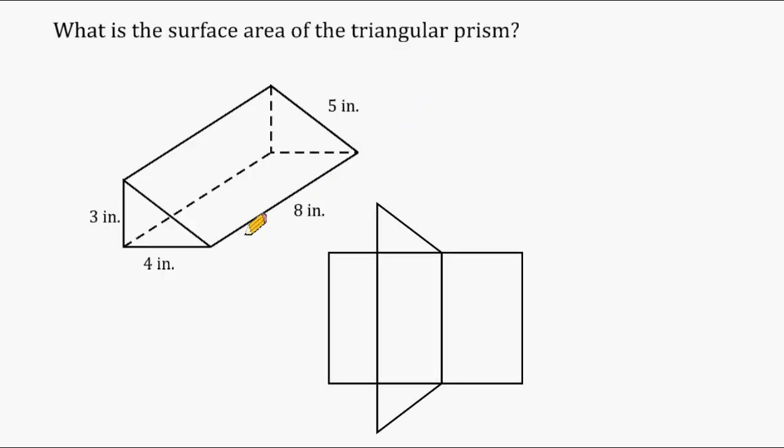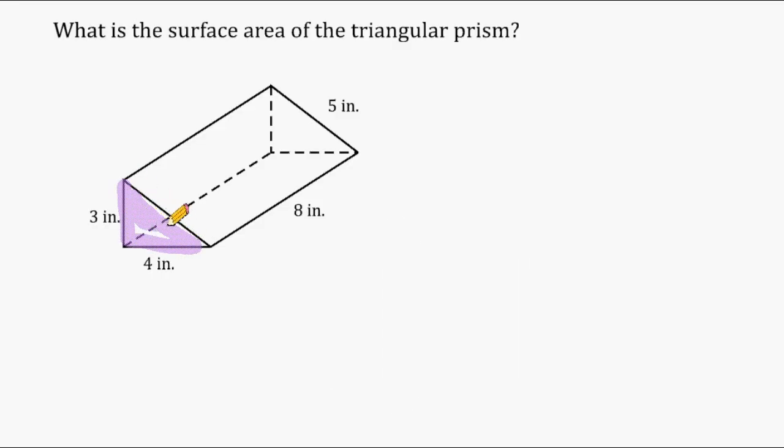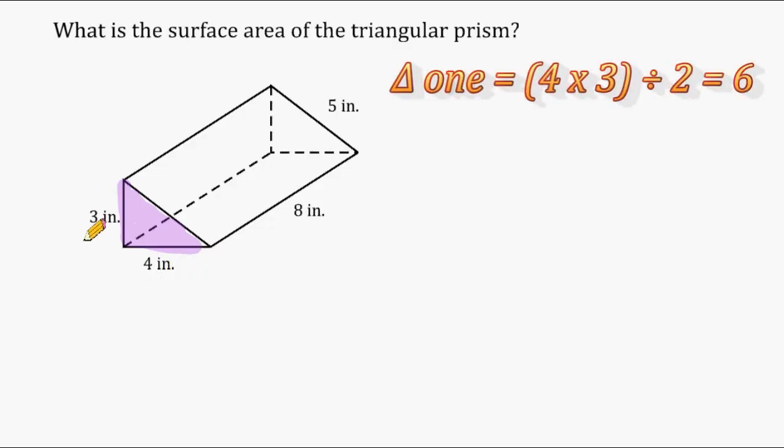Let's start by finding the area of our two triangular surfaces. We can see that we have a right triangle here, and the base of this right triangle is 4, and its height is 3. To find the area of any triangle, you multiply its base by its height and then divide that product by 2. So 4 times 3 is 12, and half of 12 is 6.